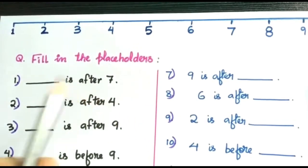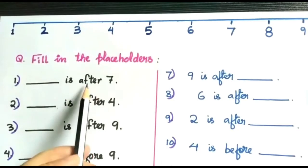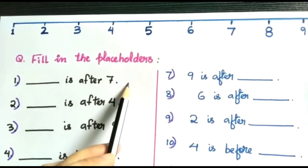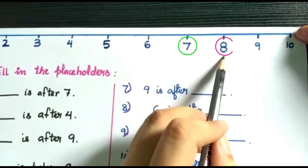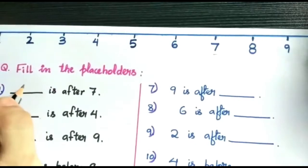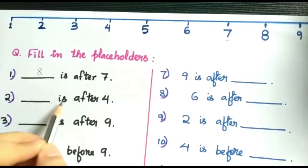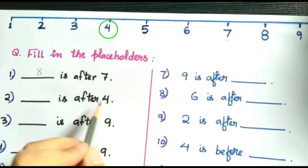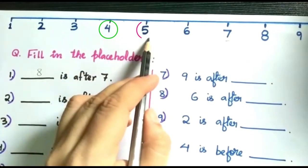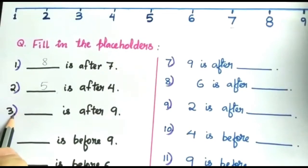Alright, now let's start. Number one: dash is after seven. Children, after seven, what comes after seven? Seven ke aage kya hai? Seven ke aage eight — we have eight, so we'll write here eight. Eight is after seven. Now next, number two: dash is after four. Tell me children, what comes after four? Four ke aage kya hai? Four ke aage five, so five is after four.